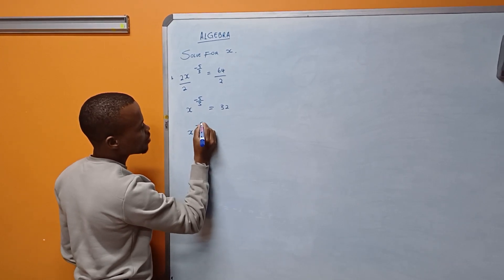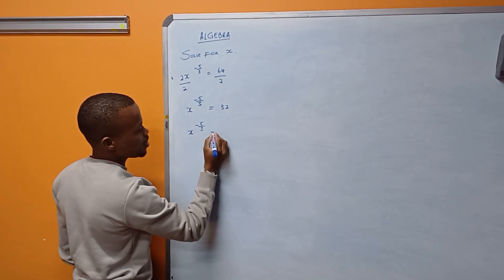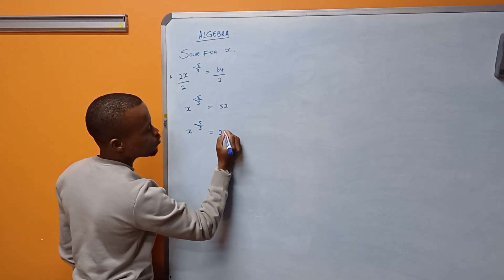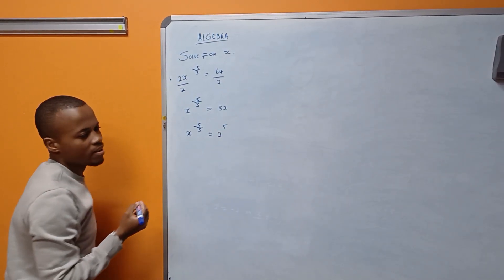x to the power of minus 5 over 3 is equal to—I can write 32 as a power of 2 to the power of 5.